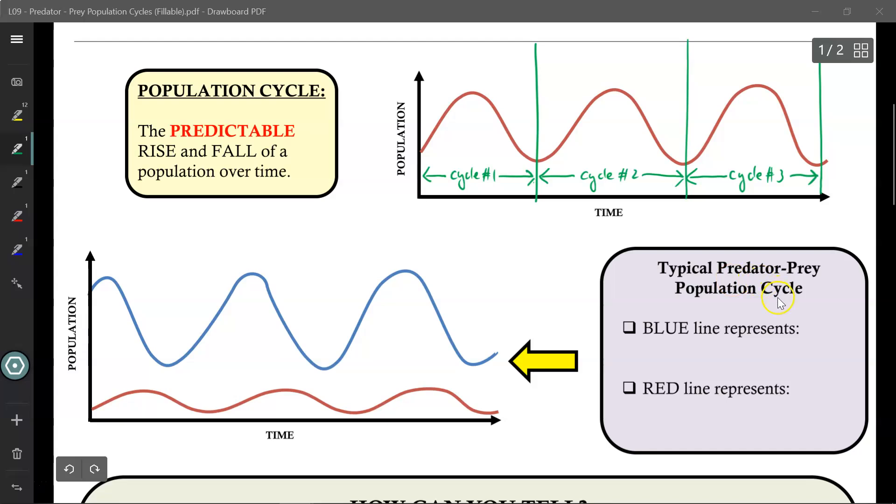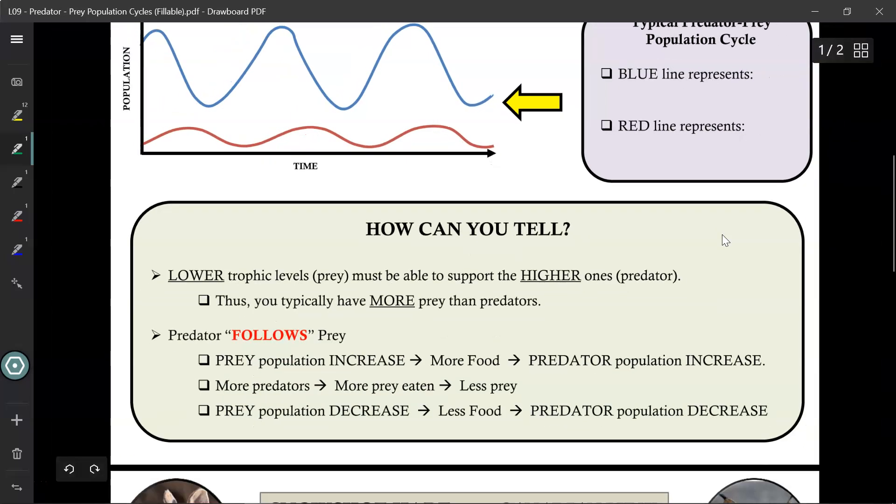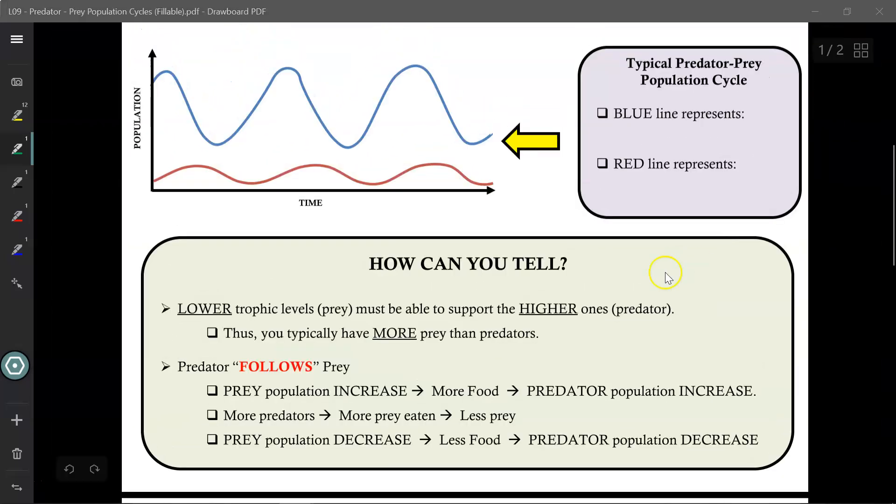With a predator-prey population cycle, we will see two lines. One line represents the predators and one line represents the prey. But how do we know which one is which? What I would like you to do at this point is press pause and try to guess, based on the information provided, which one—the blue line or the red line—represents the predator and which one represents the prey. When you're done, press play and we'll take it up together.